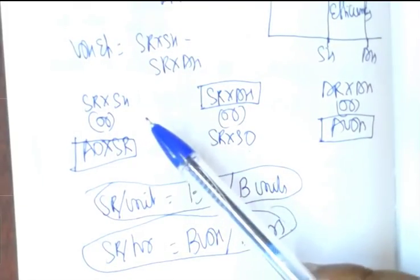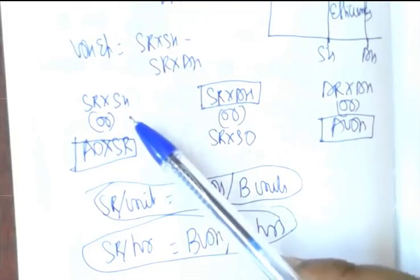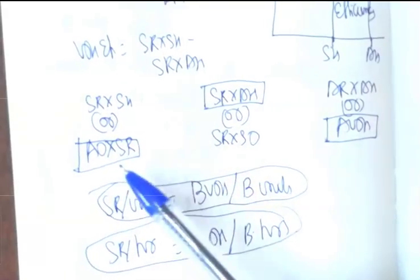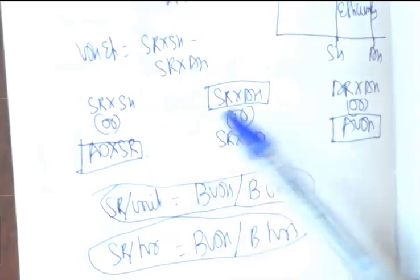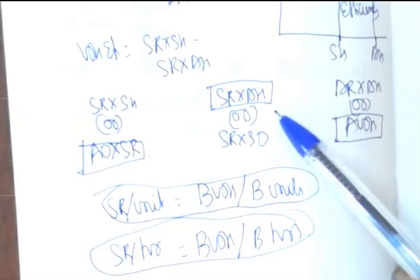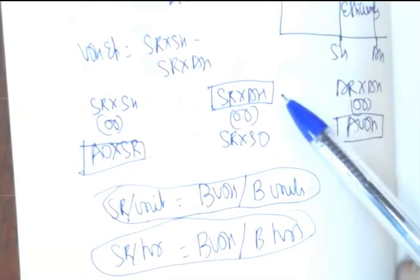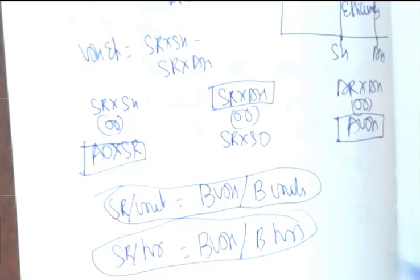When you use output (AO), you multiply it with SR per unit. If you are using SH or AH, you multiply with SR per hour. So the table reads: SR per hour × standard hours, or actual output × SR per unit; SR per hour × actual hours, or SR per unit × standard output. This is as far as variable overhead is concerned.